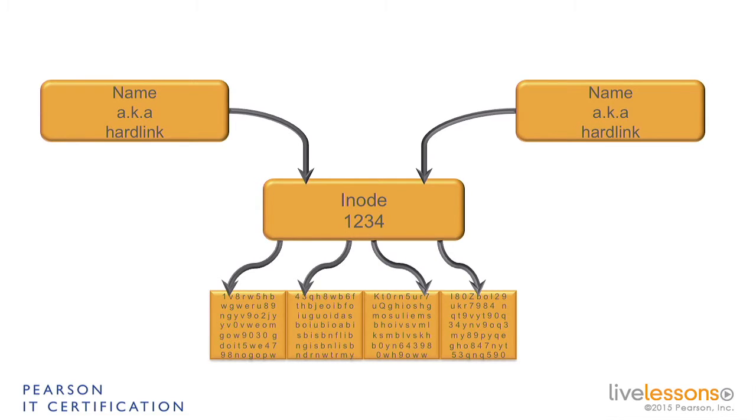A hard link is the name that is directly associated to the INODE. But it is important to understand that a hard link is one direction only, which means that the hard link knows which INODE it belongs to, but the INODE doesn't keep track of all the hard links that are associated to it. You can also assign a second name to a file if you want to. That will be a second hard link, and it can be somewhere else — it is just a different entry point to the same INODE. The only thing that the INODE would be aware of is that there are two hard links currently assigned to this INODE, but again, the INODE doesn't know which hard links these are.